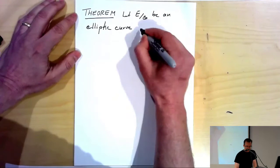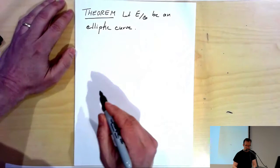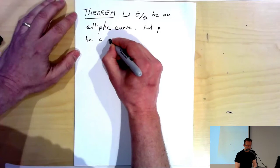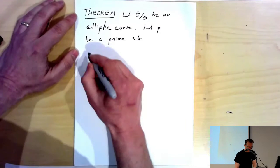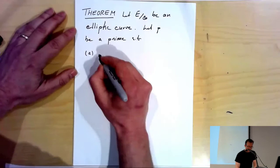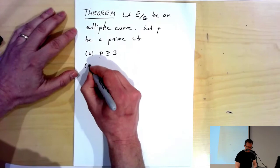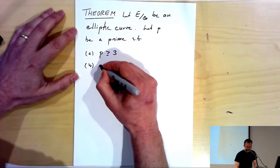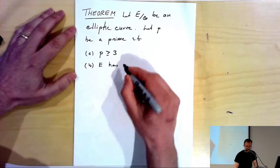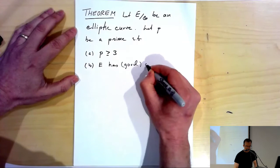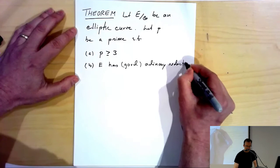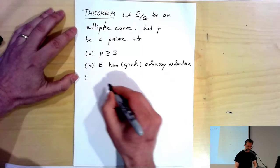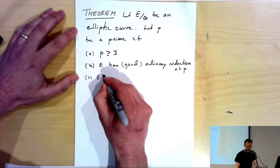Let p be a prime satisfying the following hypotheses: p is odd, E has good ordinary reduction at p — and I'll say a few words later about how we can relax some of the conditions — good ordinary reduction at p.